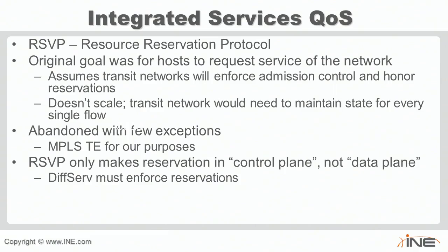We won't go through extensive DiffServ-aware TE configuration examples, but the concept is: once TE tunnels are configured, you specify which traffic goes over which tunnel — for example, MPLS experimental bits 1, 2, 3, and 4 over one tunnel, and experimental bit 5 over another. Once traffic is steered into the correct tunnel in the data plane, you enforce reservations in the core using normal QoS mechanisms: policing at the edge for admission control, and different queues in the core guaranteeing different bandwidth levels based on markings. Without QoS configuration, TE tunnels are not actually guaranteed their requested bandwidth.